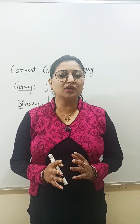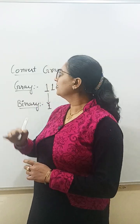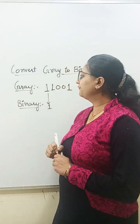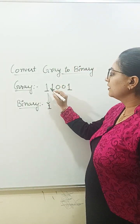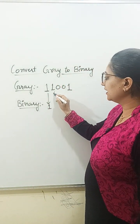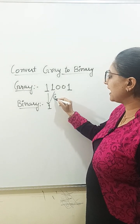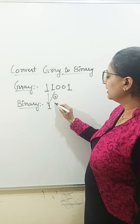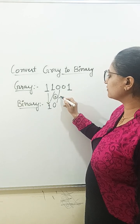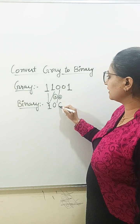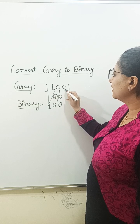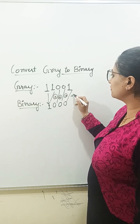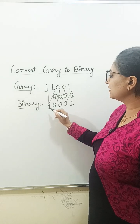Hey guys, when you want to convert a grey code to binary code, then how will you convert? First, keep it as it is, then you have to XOR the adjacent element. That is: 1 XOR 1 is 0, 0 XOR 0 is again 0, and 0 XOR 0 is again 0, and 0 XOR 1 is 1.